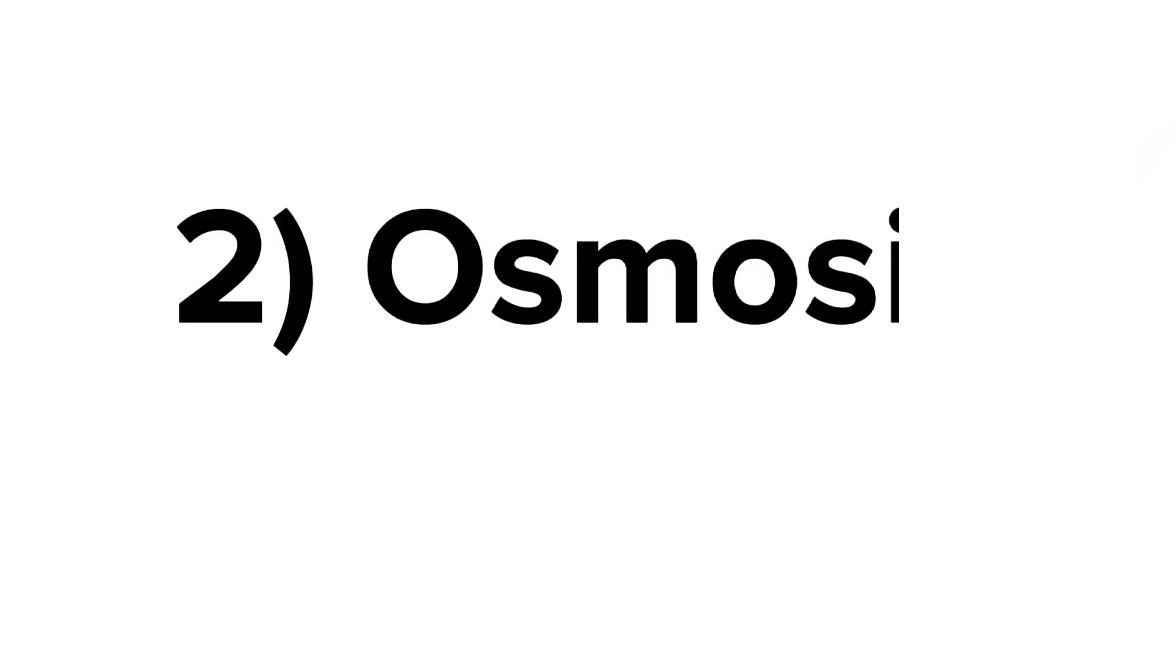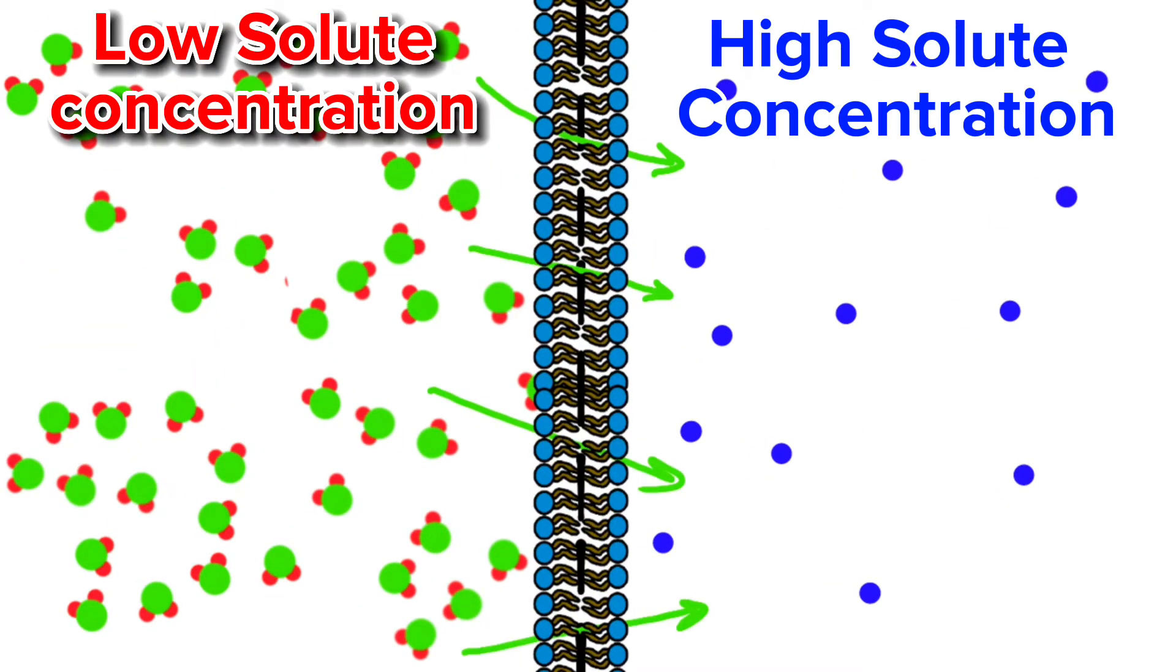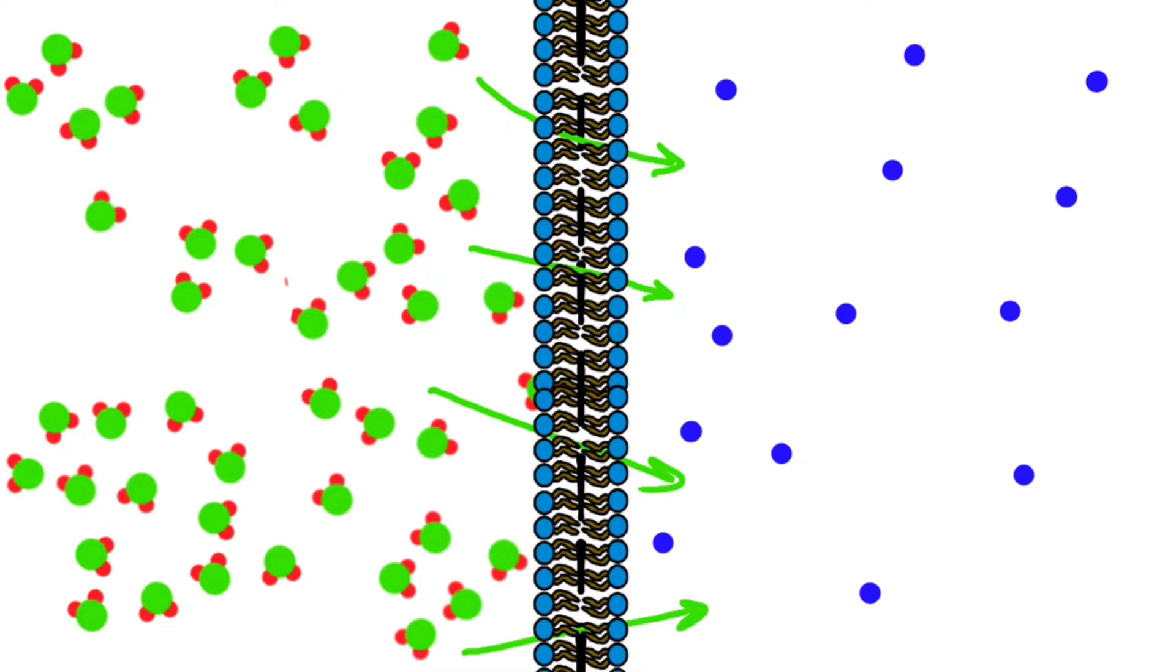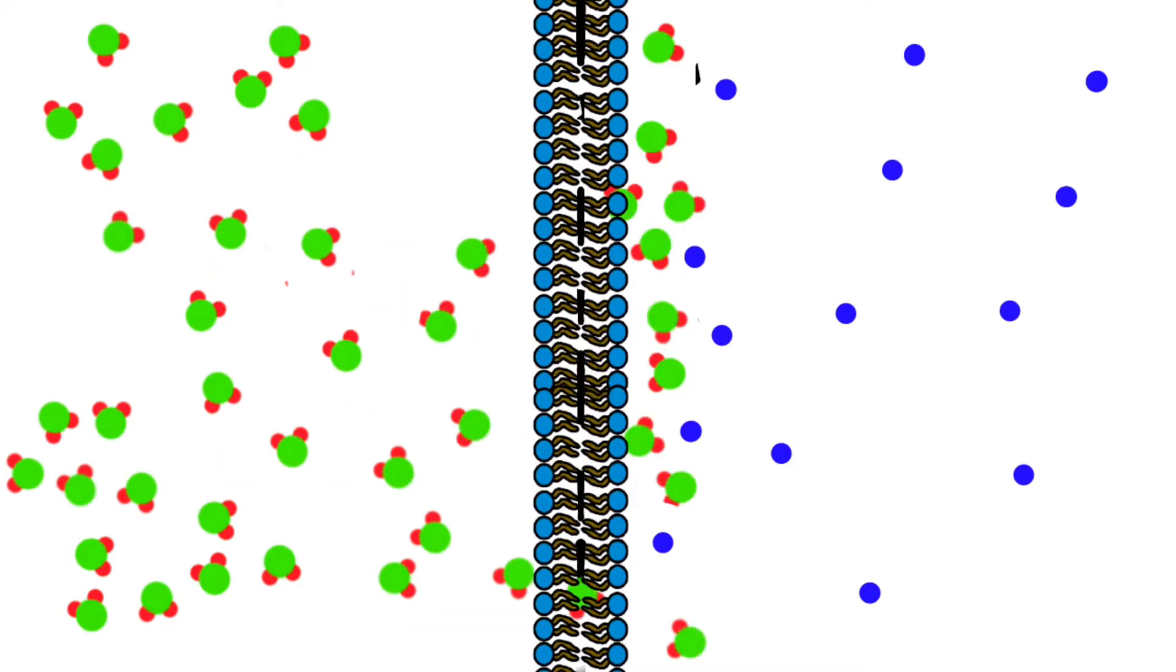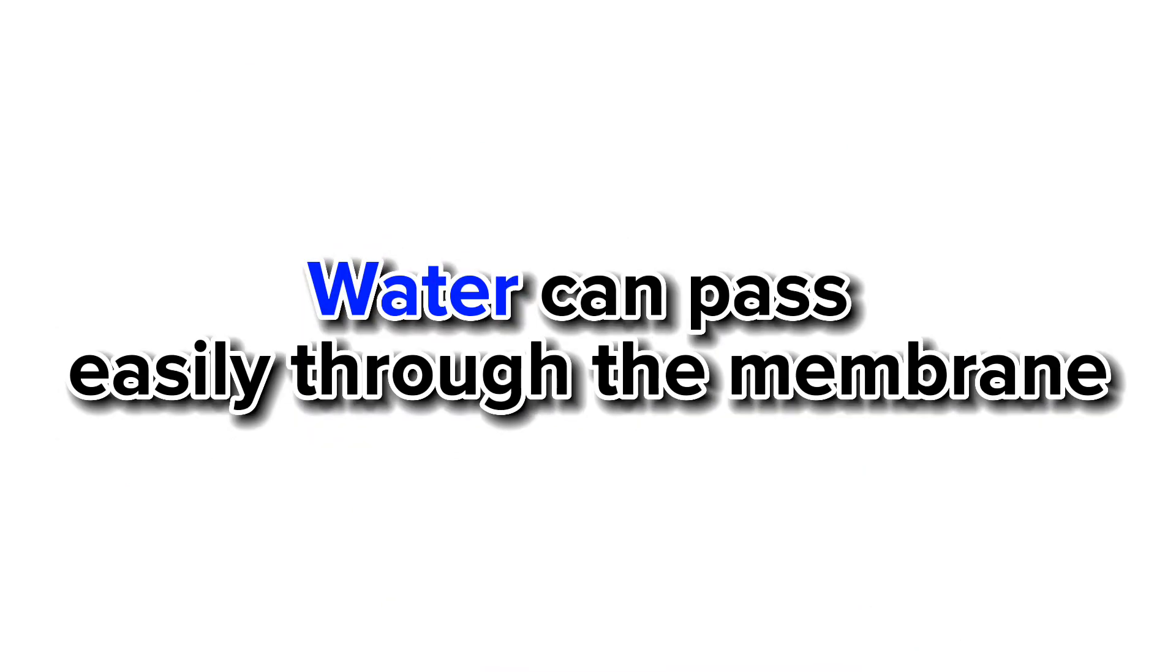The second one is by osmosis. It is the passive transport of water molecules from the low concentration to the high concentration of solute and not solvent. This usually happens since the cellular membrane will not allow the solute to pass through it, and thus water will always try to equalize the concentration of a solute across the membrane. Not to mention that water can pass easily through the membrane.